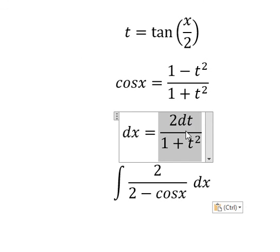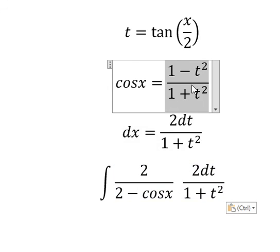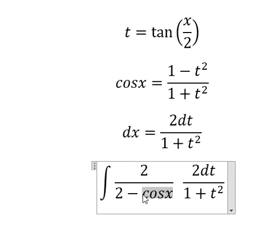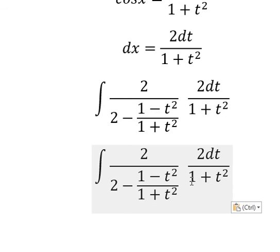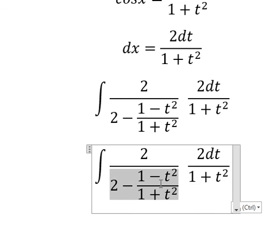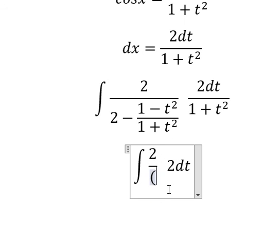So x we change by this one, cos x we change by this one. Now 1 plus t squared multiply by this one, and we have like this.